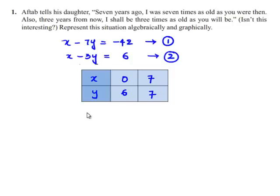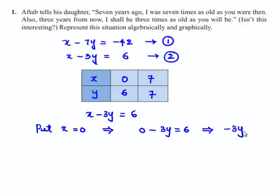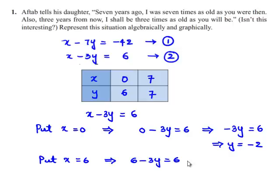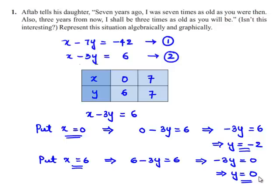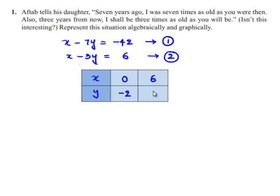The second equation is x minus 3y equals 6. If x equals 0, then minus 3y equals 6, so y equals minus 2. If x equals 6, then 6 minus 3y equals 6, giving minus 3y equals 0, so y equals 0. Tabulating: when x equals 0, y equals minus 2; when x equals 6, y equals 0.